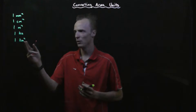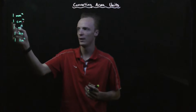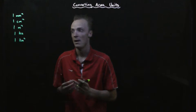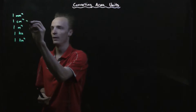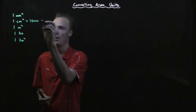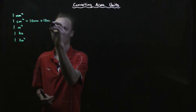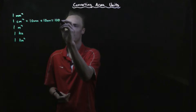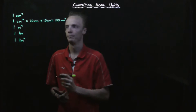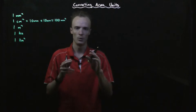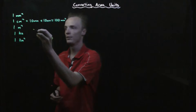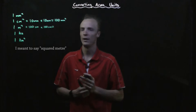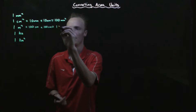To do this, let's look at what units are involved in some of these. One square centimetre is one centimetre by one centimetre. We can look at that in millimetres as ten millimetres by ten millimetres. When we multiply that out, this is equal to one hundred square millimetres. In one square metre, that's one metre by one metre, or a hundred centimetres by a hundred centimetres, which equals ten thousand square centimetres.